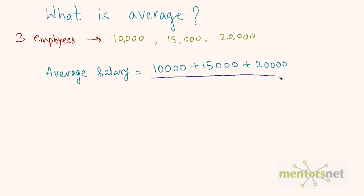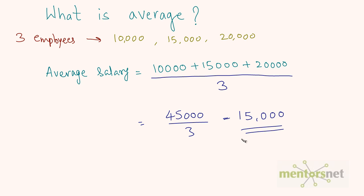Once we add the salaries, we have the complete pool of cash. Now we distribute this cash equally to all three employees by dividing the total sum by the number of employees, which is 3. So the average salary is 10,000 + 15,000 + 20,000 = 45,000 divided by 3, which equals 15,000 rupees.